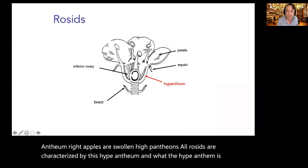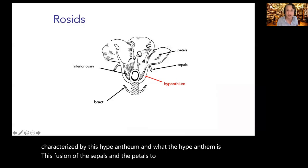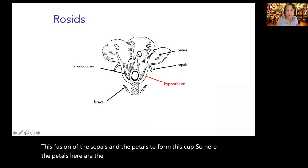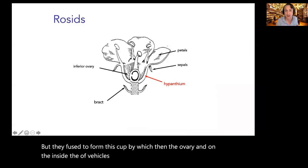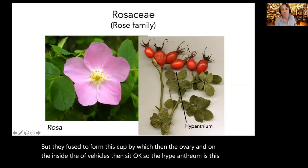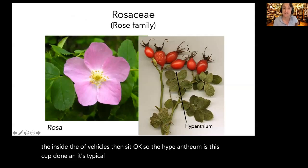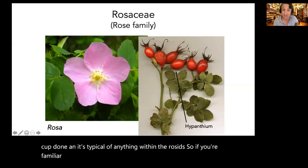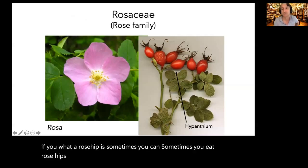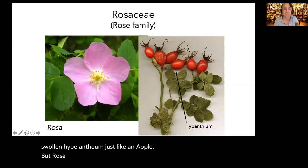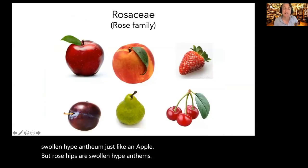The hypantheum is the cup formed by fusion of the sepals and petals, inside which the ovary and ovules sit. What you eat in an apple is actually a swollen hypantheum. All rosids are characterized by this hypantheum. Rose hips are also swollen hypantheums. A lot of rosed fruits are elaborated hypantheums — the maturing and swelling with sugars of that fleshy tissue makes up the fruit of the Rosaceae.